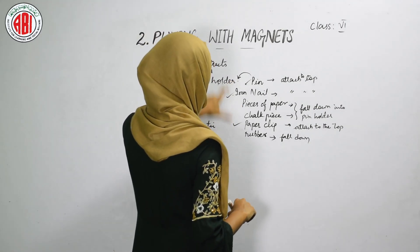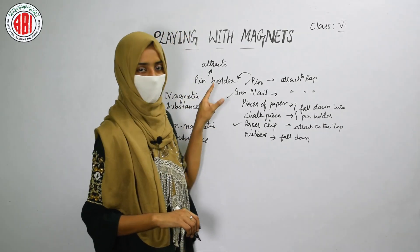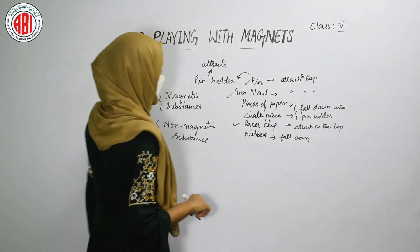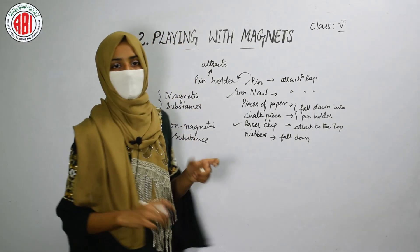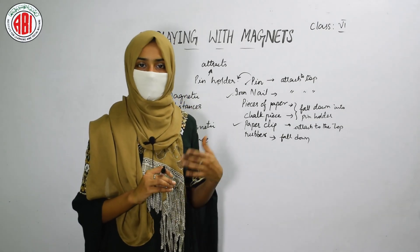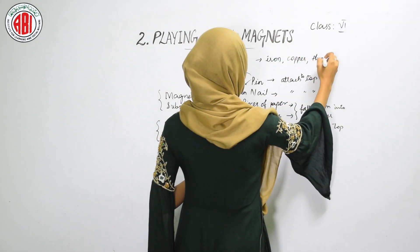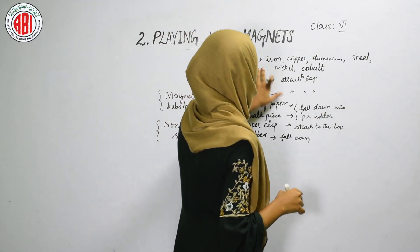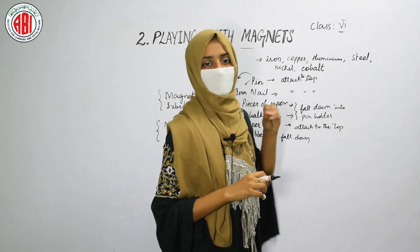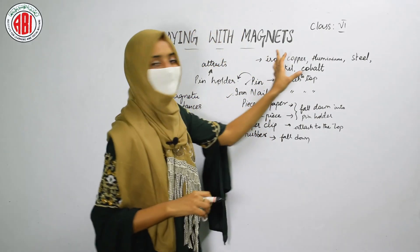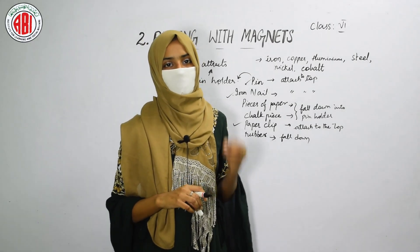Pin, iron nail, and paper clip are the magnetic substances as they are attracted to the top of the pin holder. Paper, chalk piece, and rubber are non-magnetic substances which do not attach to the top. Magnets are made up of alloys of iron, copper, aluminium, steel, nickel, and cobalt. The alloys of all these materials can act as a magnet. We can make a powerful magnet by using the alloys of all these substances, and magnets have the property to attract different objects.